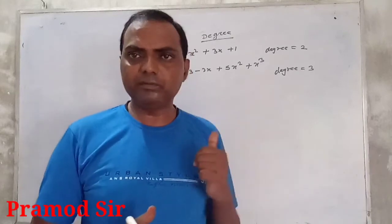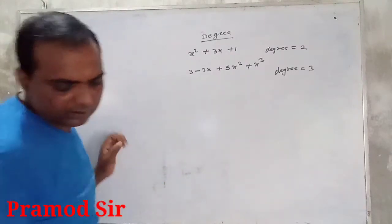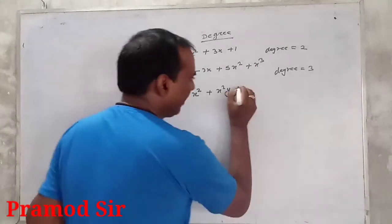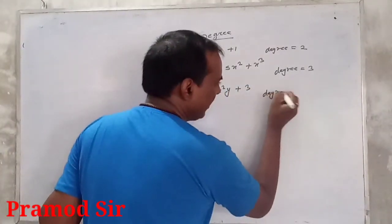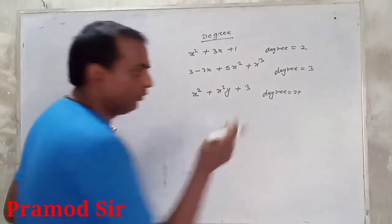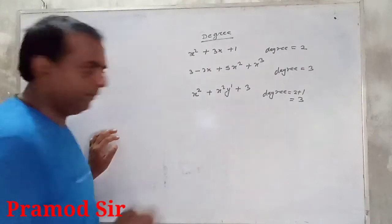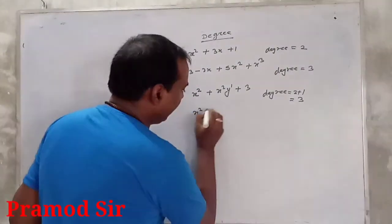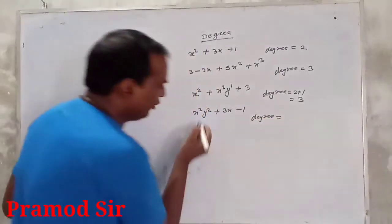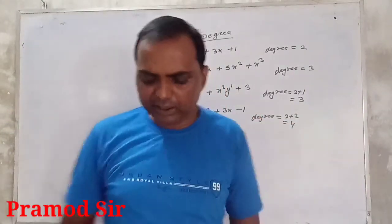But if there are two variables, the degree is determined differently. For example, x²a + x²y + 3 — x has power 2 and y has power 1, so degree is 2 + 1 = 3. Similarly, for x²y² + 3x − 1, the degree is 2 + 2 = 4. Is tarah se hum degree ko determine kar lete hain.